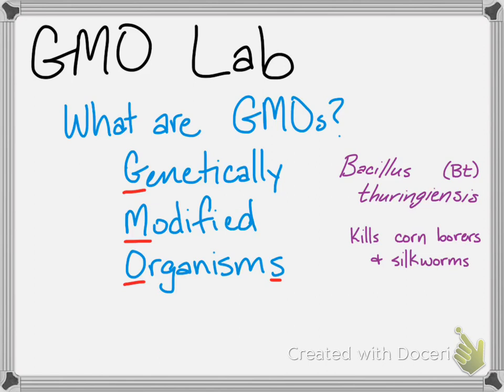By adding this gene to the plant itself, it's going to kill only the insects that are feeding on those plants. Of course, they can develop resistance, and that's a whole other issue we don't have time for today. But that gene is engineered — so the organism is genetically engineered, and the gene itself also has to be engineered.